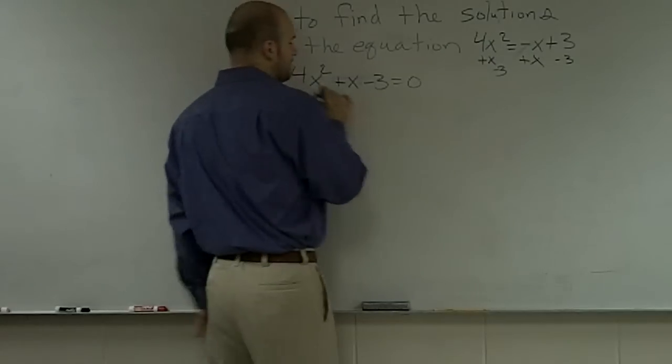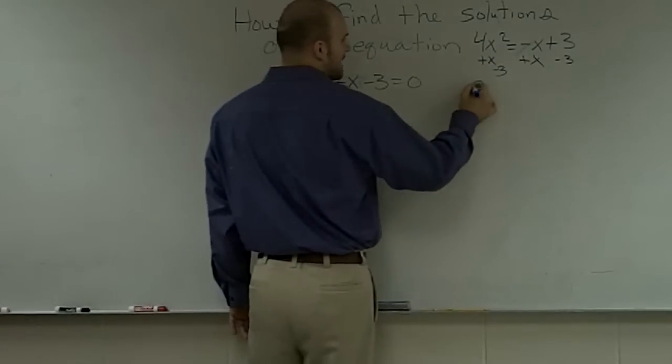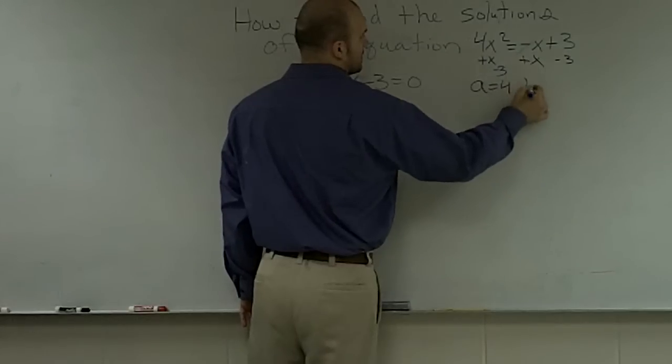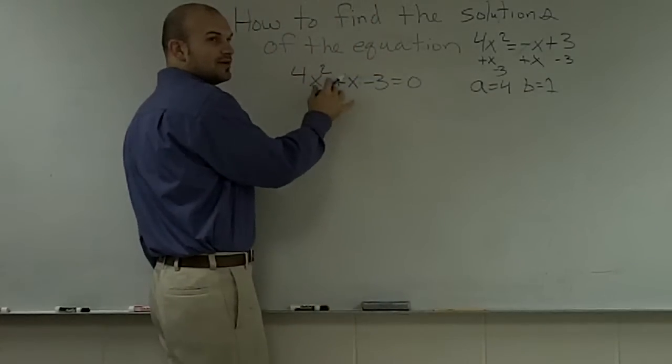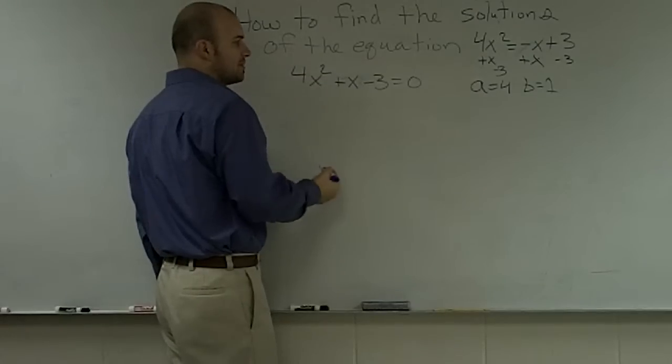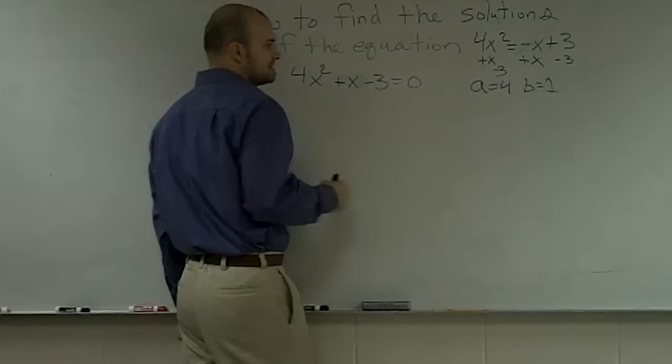Here I have a 4 in front of my quadratic term, so my a is going to be equal to 4. b is equal to 1, because there's nothing, it seems like there's no number in front, so we always remember that 1 can always be in front there, and my constant term is negative 3.